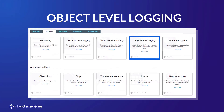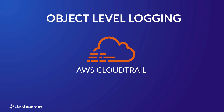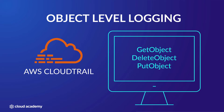Hello and welcome to this short lecture which will introduce you to the object-level logging capabilities within your S3 buckets. This feature is actually more closely related to the AWS CloudTrail service than S3, as it's AWS CloudTrail that performs logging activities against Amazon S3 data events. These data events are specific API calls used in S3, such as get object, delete object and put object.